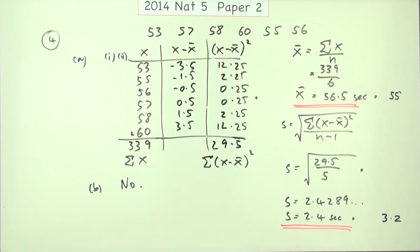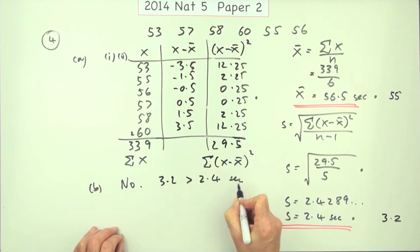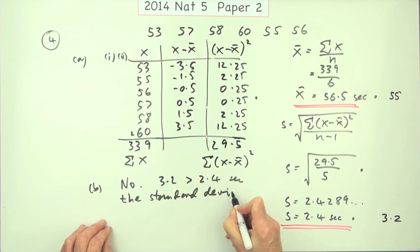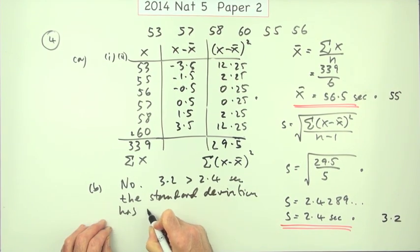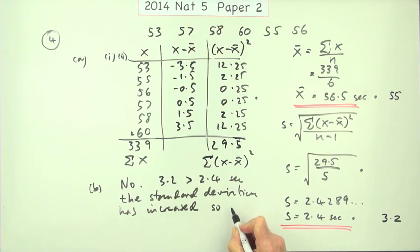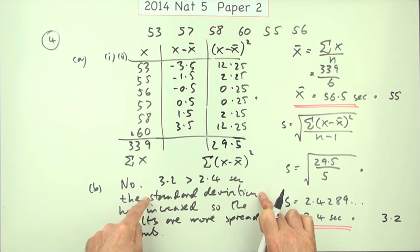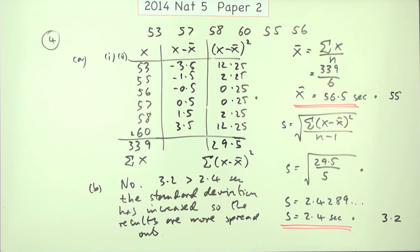Because the standard deviation is bigger now. No. 3.2 is bigger than 2.4 seconds. I'll put this all down anyway. The standard deviation has increased. So the results, an awful lot of writing, then whatever you want, are more spread out or less consistent. I've said more, I'll just say more spread out. Or you could say less consistent because you've mentioned it all. You're showing you're using the standard deviation. You're mentioning the word standard deviation in conjunction with spread or consistency. And you're showing that it has done that by comparing the numbers. And that would be a mark.